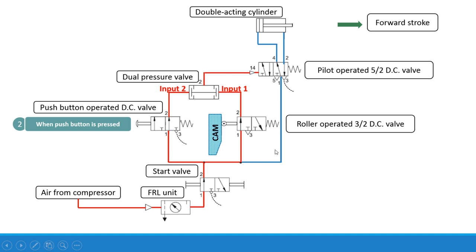In this way, we have the dual pressure valve working as the AND logic function — when it receives two inputs, then and only then it will produce output at port two. And when this output is produced, the pilot operated 5x2 direction control valve gets operated. Thank you very much for watching.